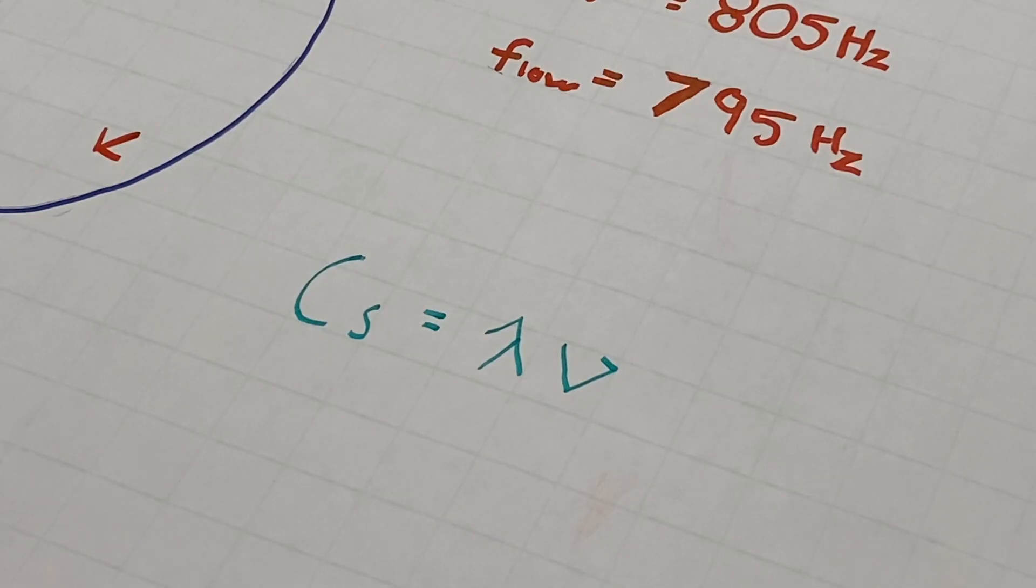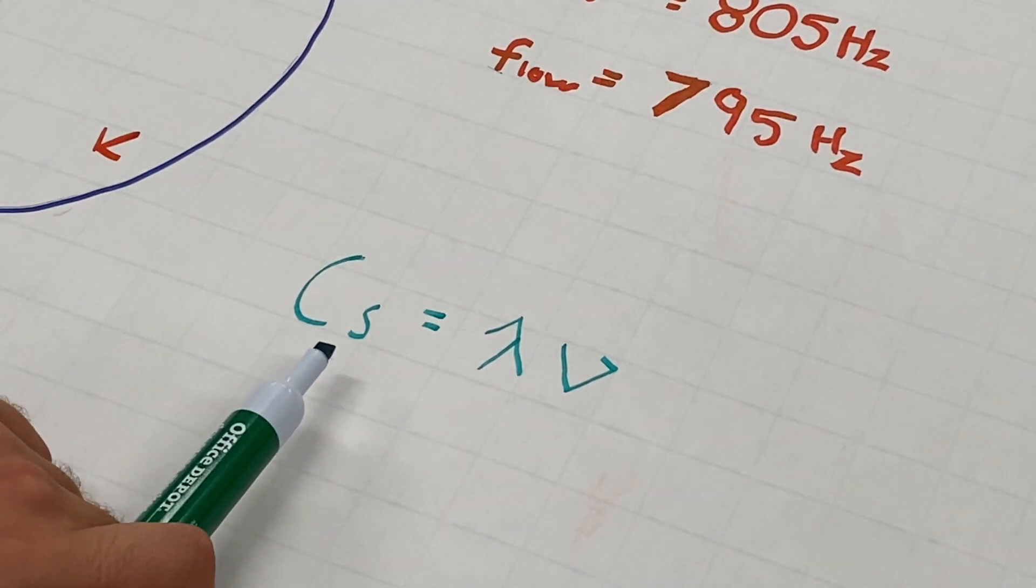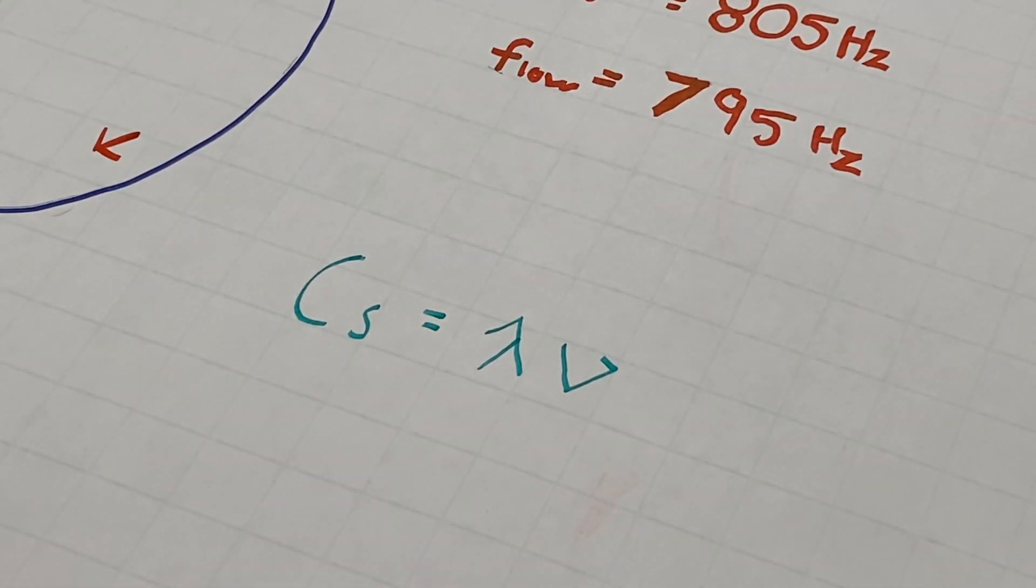The Doppler effect is a phenomenon with waves. We'll be representing the velocity of the wave using cs. We'll be representing the wavelength of the wave using the Greek letter lambda, and we'll be representing the frequency of the wave using the Greek letter nu.